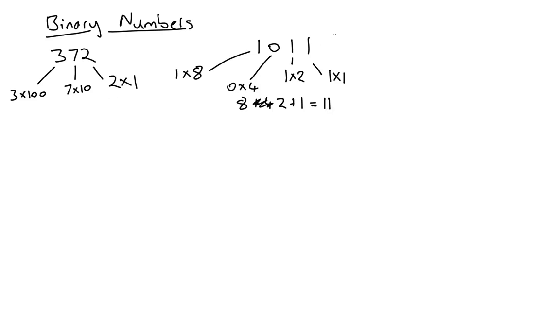So this is eleven in binary. Let me just check: we've got one plus two, that's three, there's no fours, and we've got eight, so that's eleven.